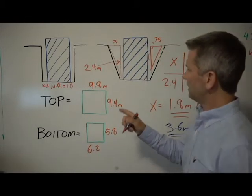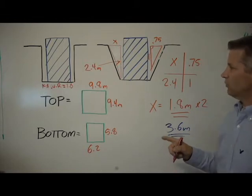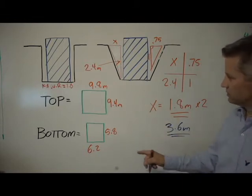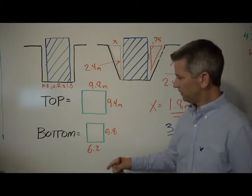And then we have 6.2 plus 3.6 is 9.8. So now we have an upper excavation that is 9.8 by 9.4. We have a lower excavation that is 5.8 by 6.2.